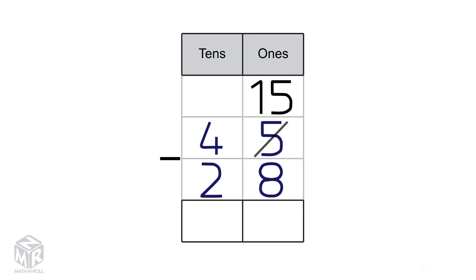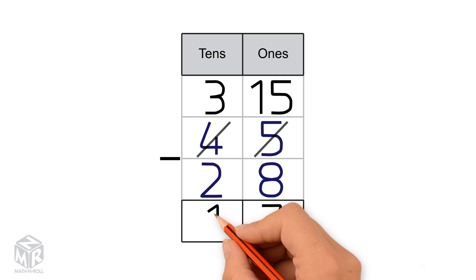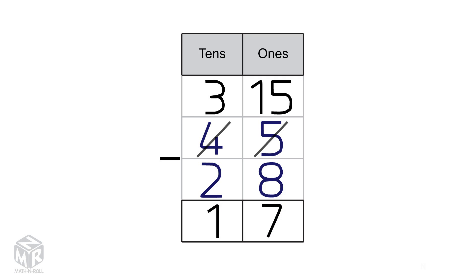Now we have three 10s, so we cross out the 4 and put 3 at the top. Now we subtract the 1s: 15 minus 8 equals 7. Now we subtract the 10s: 3 minus 2 equals 1, so 45 minus 28 equals 17.